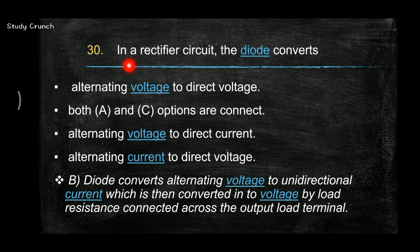Next, in a rectifier circuit, the diode converts alternating voltage to direct voltage and alternating voltage to direct current. So the answer is both A and C options are correct.